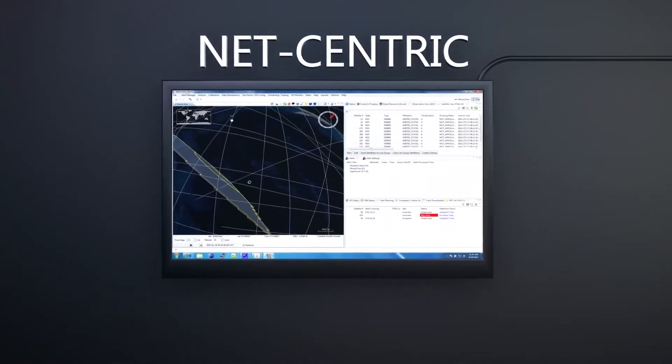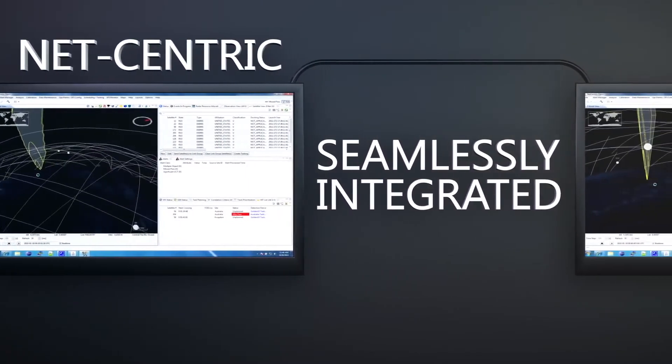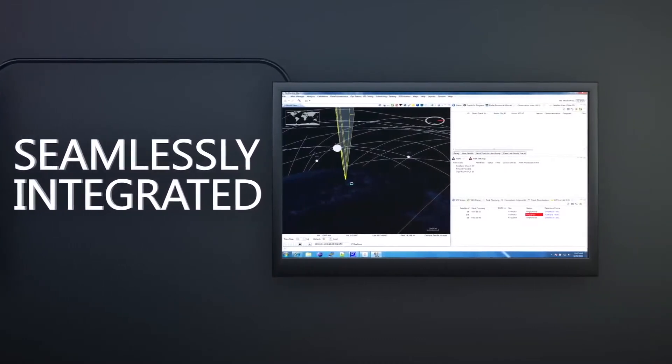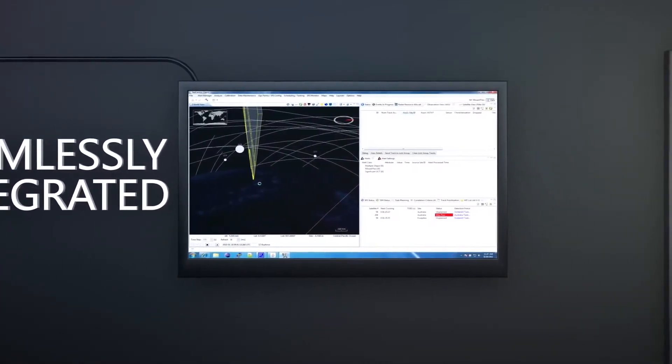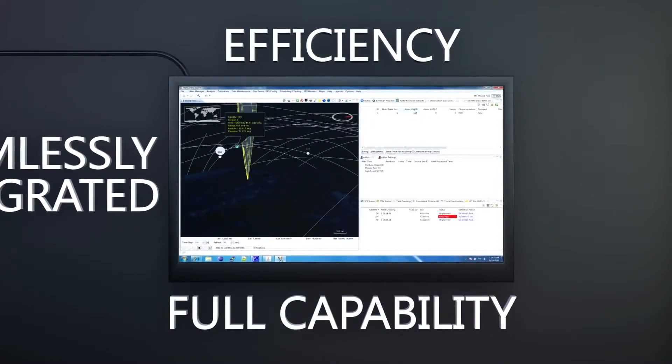The Space Fence system is net-centric and seamlessly integrated into the existing space surveillance network, providing services to external users such as JSPOT and coordinating handoffs to other SSN sites. It is designed for efficiency and full capability, while minimizing bandwidth needs.